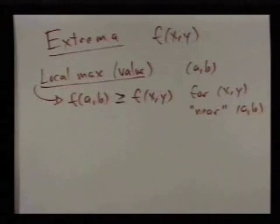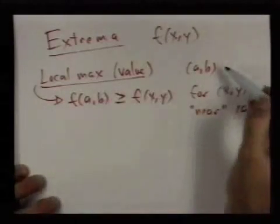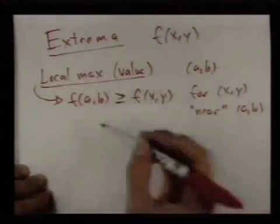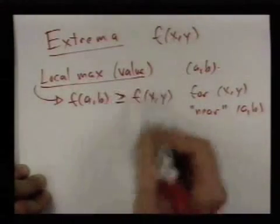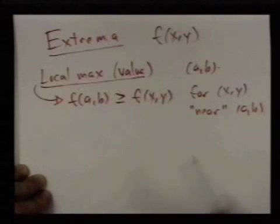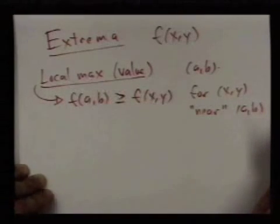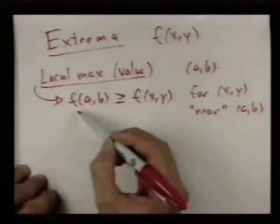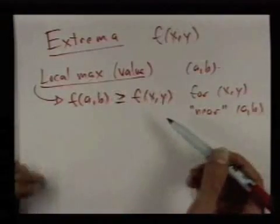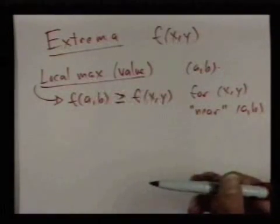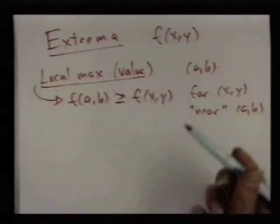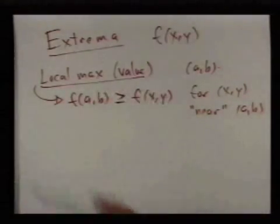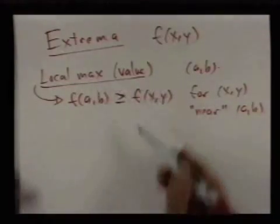A more precise way of saying 'near' is that there's some disk containing the point (a,b) and on that disk, f(a,b) is bigger than the values of the function on the disk. What it really means is that if you think of the graph of the function, you're at a hilltop on the function, but you're not necessarily at the largest value possible. It just means it's the largest value nearby.